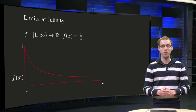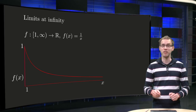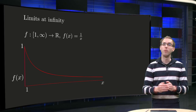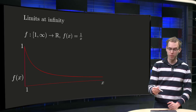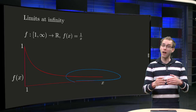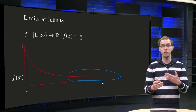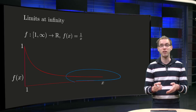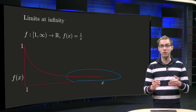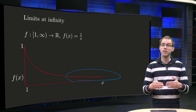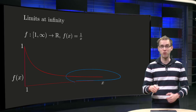Let's look at an example: f(x) = 1/x with domain [1, ∞). So we start at x = 1 and see what happens if x becomes large. Looking at the graph, if x becomes larger and larger, f(x) becomes smaller and smaller — if x = 10 we have 1/10 = 0.1, if x = 100 we get 1/100 = 0.01, etc. So we see that the function values become closer and closer to 0.